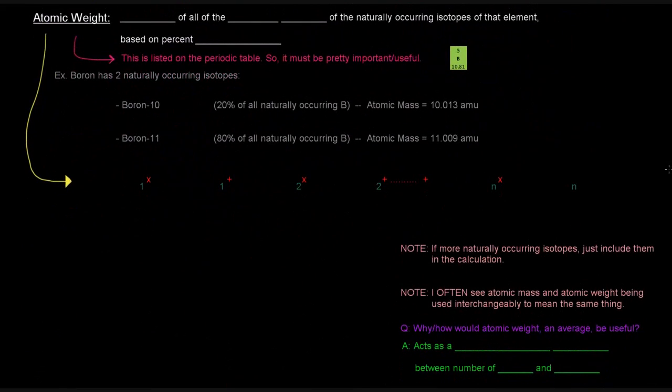Now on to atomic weight. What is atomic weight? Atomic weight is the average of all of the atomic masses of the naturally occurring isotopes of that element, and it's based on percent abundance. What the heck does that mean? That was a mouthful. What does any of that mean? Well, we'll kind of explain it with an example here in just a second. But one thing I do want to mention is that this atomic weight is actually what's listed on the periodic table. So it's got to be something that's pretty important or pretty useful. And it is.